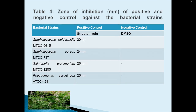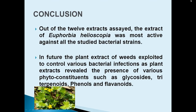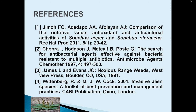This table shows the minimum inhibitory concentration of Euphorbia helioscopia extracts, and this table shows zone of inhibition of positive and negative controls against all four bacterial strains. Coming to the conclusion: out of 12 extracts, Euphorbia helioscopia shows maximum activity against all bacterial strains. In future, plant extracts of weeds may be exploited to control various bacterial infections, as plant extracts revealed the presence of various phytoconstituents such as glycosides, triterpenoids, phenols and flavonoids. These are some of the references used in this study.